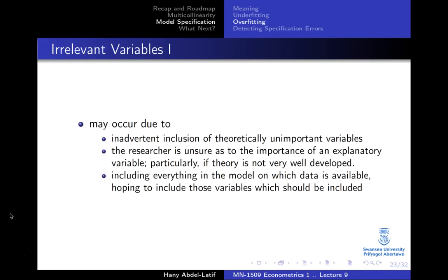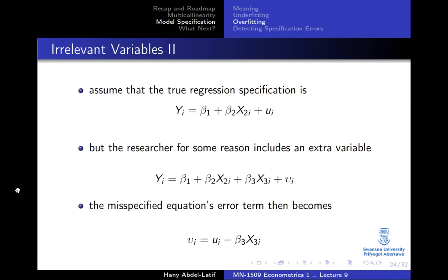What if you include an irrelevant variable? When you include variables that are not important to the model, one reason is that you don't have a well-developed theory explaining the dependent variable's behavior, so you include everything you have data for. Let's say the true model is y depending on x2 and some error term u_i, but because you don't have enough information you include an extra variable x3, giving a new error term v_i equal to u_i minus beta_3 times x3.